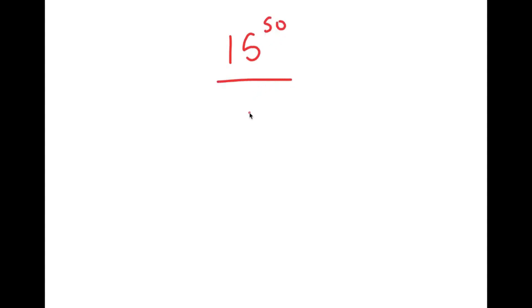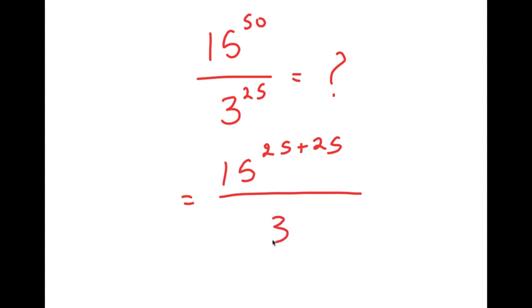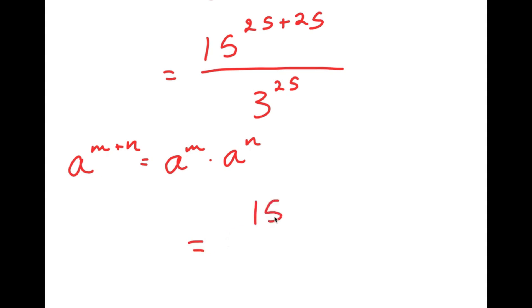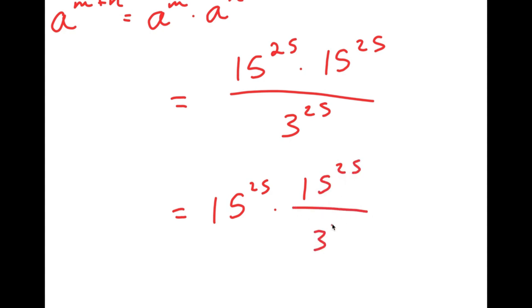In this video, I'm going to solve the problem 15 to the power of 50 over 3 to the power of 25. To solve this, I'm going to first start by rewriting this as 15 to the power of 25 plus 25, so we wrote 50 as 25 plus 25, over 3 to the power of 25. The reason I did this is because now I can use the property a to the power of m plus n is equal to a to the power of m times a to the power of n. So 15 to the power of 25 plus 25 equals 15 to the power of 25 times 15 to the power of 25, and I have this over 3 to the power of 25.